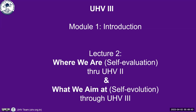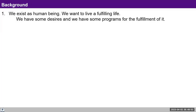These two things we will look at in lecture 2: where we are now after UHV 2 and where we aim to be after UHV 3. When we went through UHV 2, we saw that as a human being — we discussed this when we talked about our aspirations — that we all want to live a happy life, a fulfilling life. We all have some desires and we try to fulfill those desires through various programs that we set for ourselves.